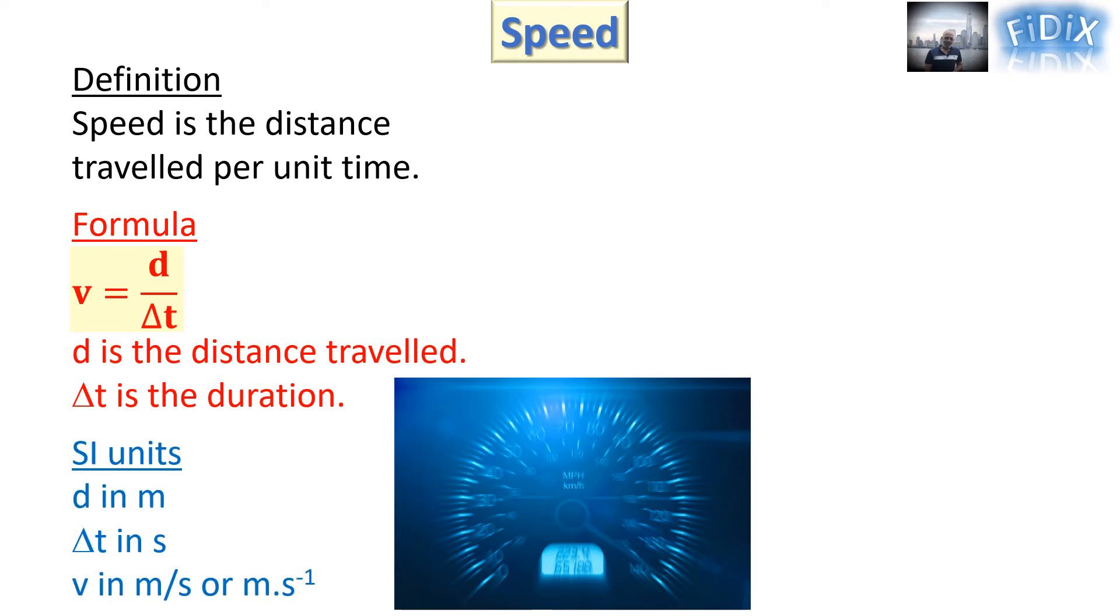In the international system of units, D is expressed in meters, delta T in seconds, and V in meters per second.